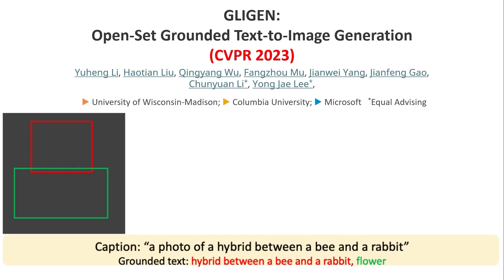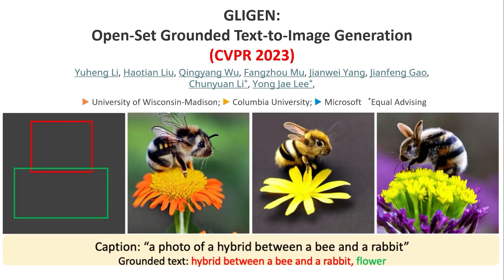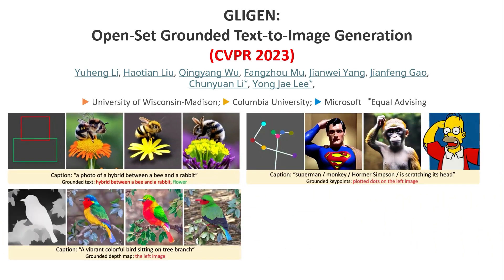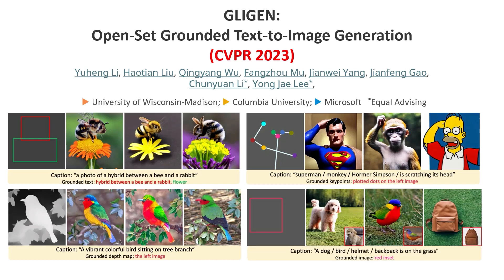For each bounding box you have a grounded text, and you localize and say: in the red bounding box you have a hybrid between a bee and a rabbit, and in the green bounding box you have a flower, and it generates images like this. But bounding box is not the only grounding you can have — you can also have keypoints or a depth map, or even a bounding box combined with a grounded image. So I can give an image of a dog, a bird, or a backpack and force the diffusion model to use that object for image generation in the context we are interested in.